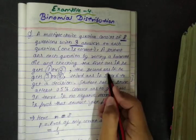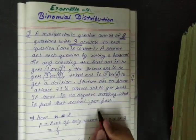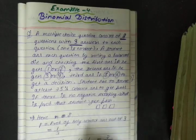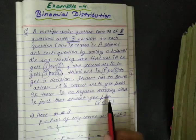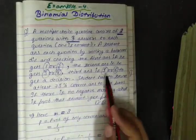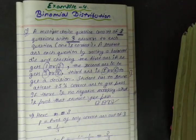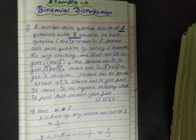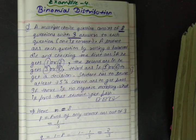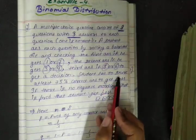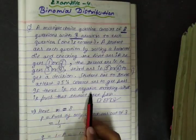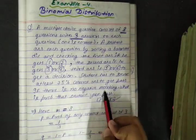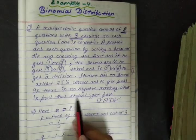He checks the third answer if he gets 5 or 6. So there are 3 answers: first answer for 1 or 2, second answer for 3 or 4, third answer for 5 or 6 — only one answer is correct, and he selects by rolling a balanced die. A student has to secure at least 75% correct answers to get passed, and there is no negative marking. What is the probability that the student gets passed?